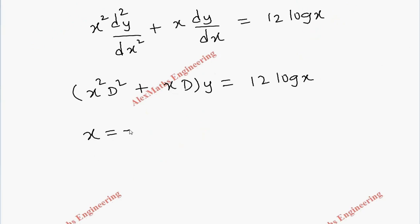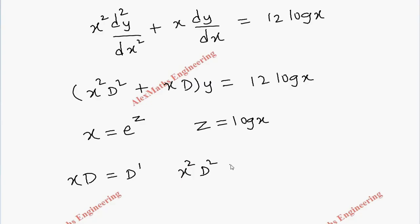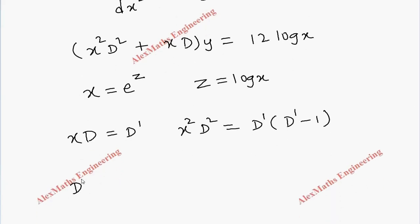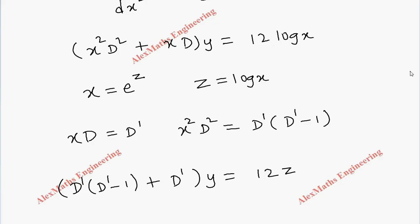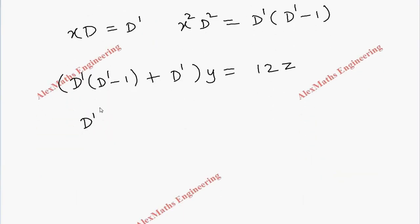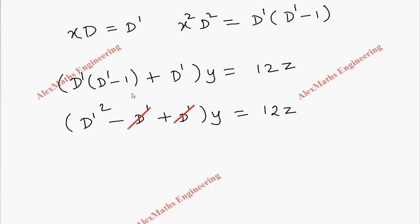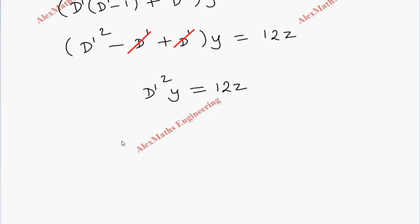Using the substitution x = e^z, or equivalently z = log x, we get x·D as D-dash and x²·D² as D-dash(D-dash minus 1). Substituting into the equation: D-dash(D-dash minus 1) plus D-dash, times y, equals 12z. This simplifies to D-dash² minus D-dash plus D-dash, times y, equals 12z. The plus D-dash and minus D-dash cancel, leaving D-dash² · y = 12z.